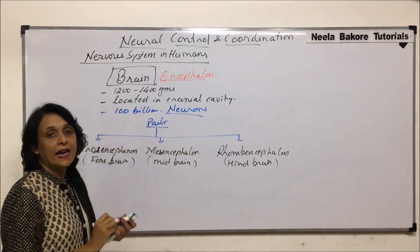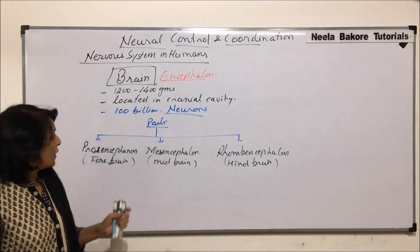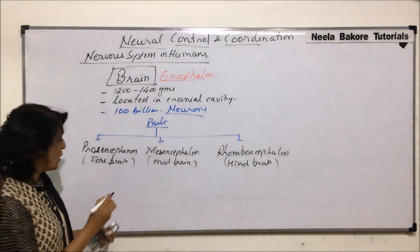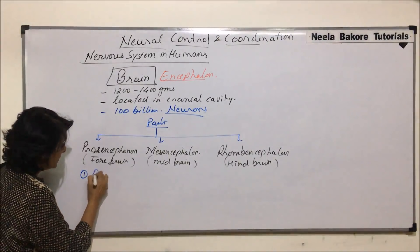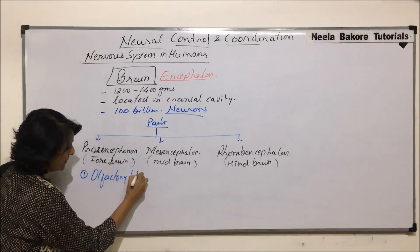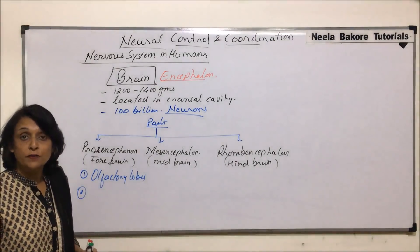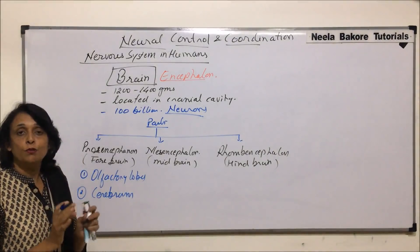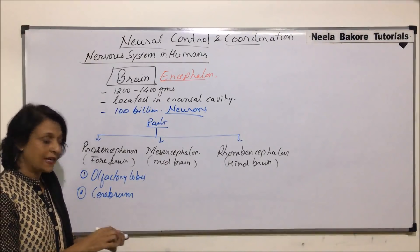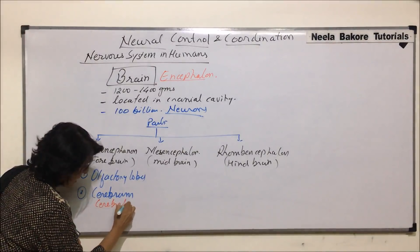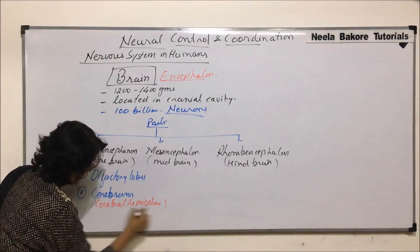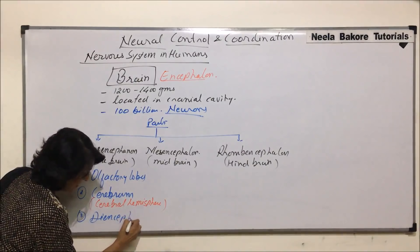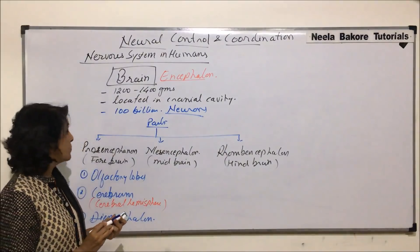So forebrain, midbrain, and hindbrain are the common terms, while prosencephalon, mesencephalon, and rhombencephalon are the technical terms for these three parts. Prosencephalon is made up of three parts: a pair of olfactory lobes, the largest part of the brain which is cerebrum — also known as cerebral hemispheres because it is divided into two equal halves — and the third part known as diencephalon.